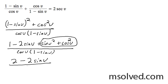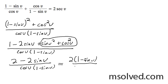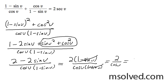All over cosine v, 1 minus sine v. I can factor out a 2 here: 2 times quantity 1 minus sine v, all over cosine v times 1 minus sine v. These cancel each other out, and I get 2 over cosine v, or the same thing as 2 secant v.